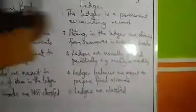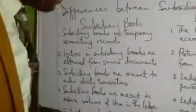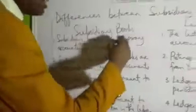The first difference: subsidiary books are temporary accounting records. Subsidiary books are temporary accounting records, while the ledger is a permanent accounting record.